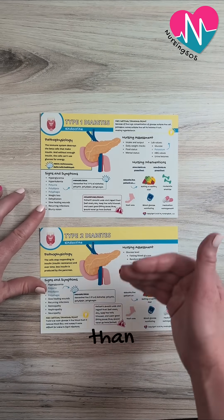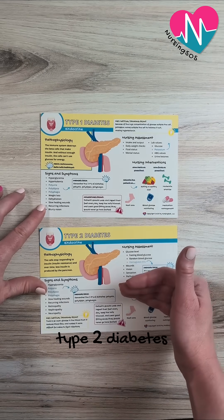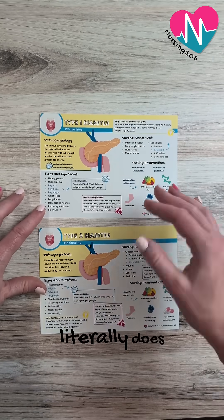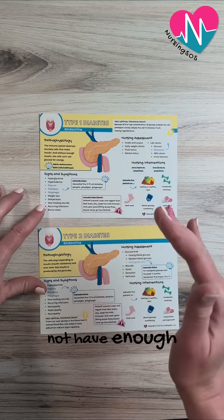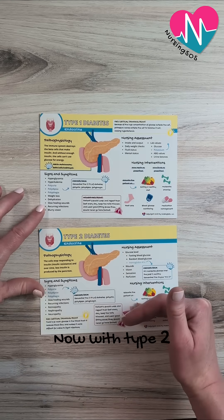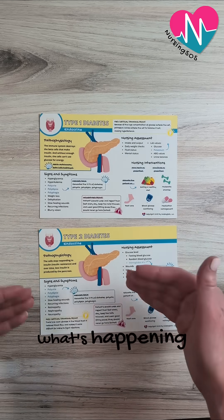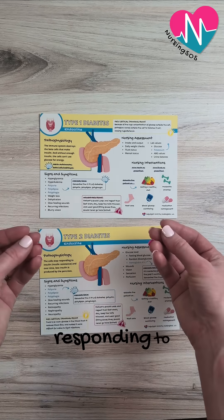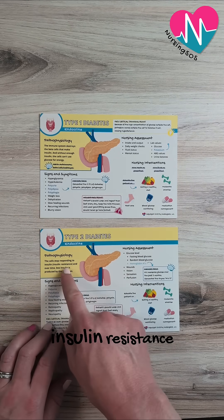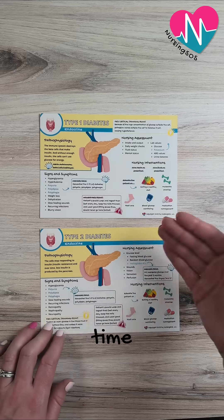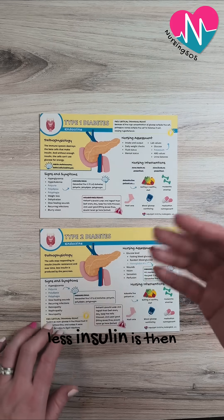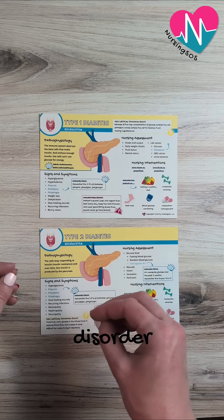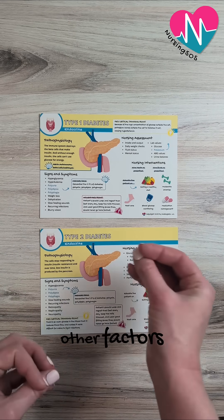Now, this is different than type 2 diabetes. In type 1 diabetes, the patient literally does not have enough insulin. With type 2 diabetes, what's happening is the cells stop responding to insulin. This is called insulin resistance. And then over time, less insulin is produced by the pancreas. But it's not an autoimmune disorder — it's caused by other factors.